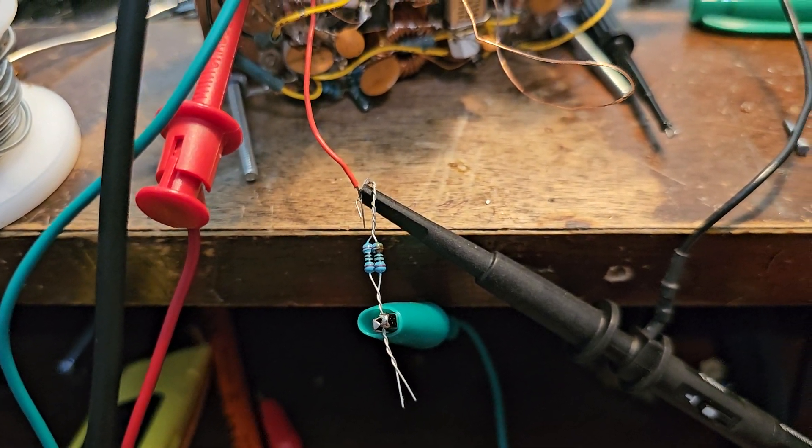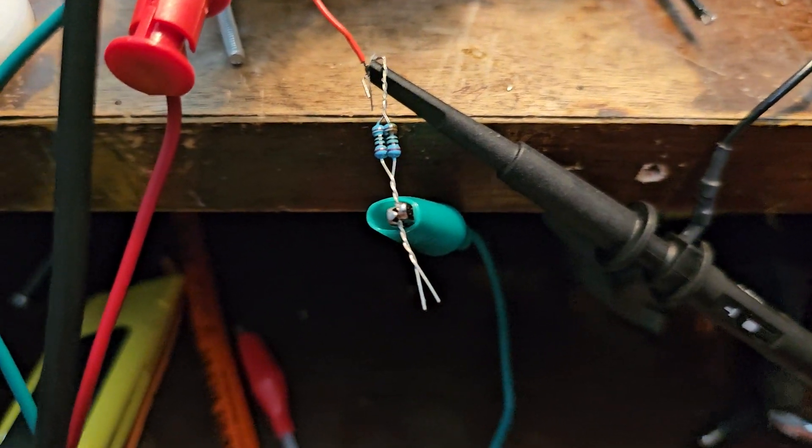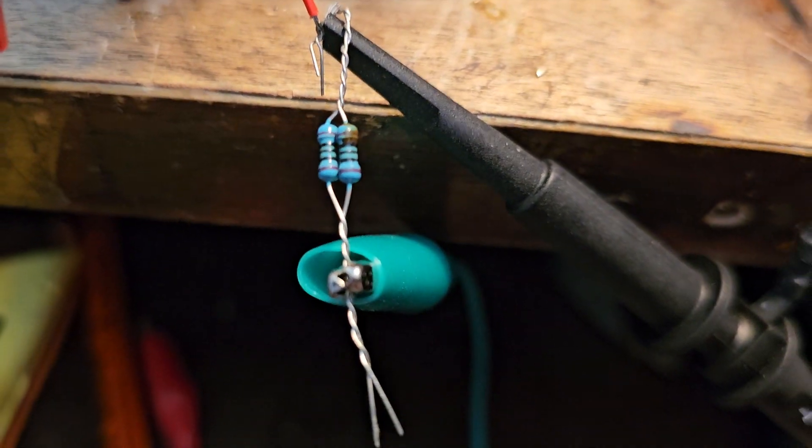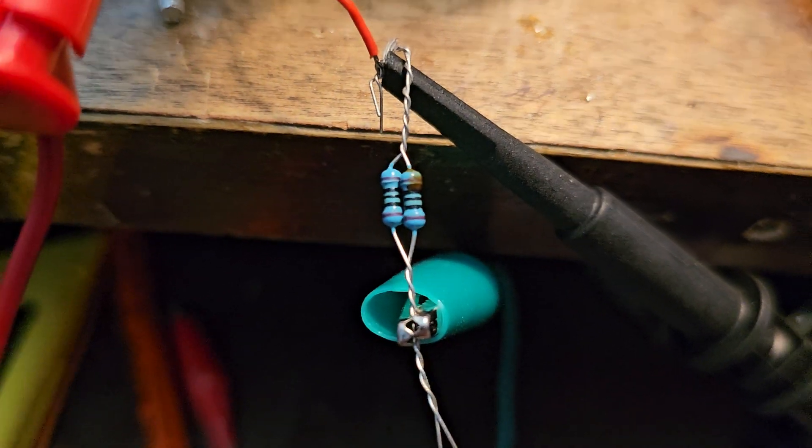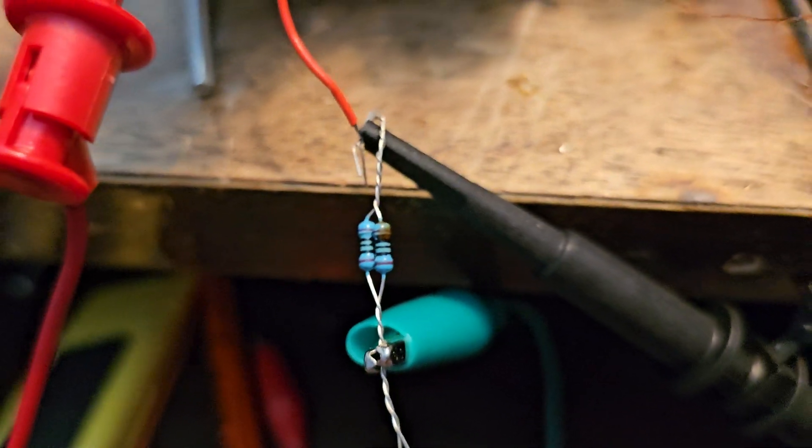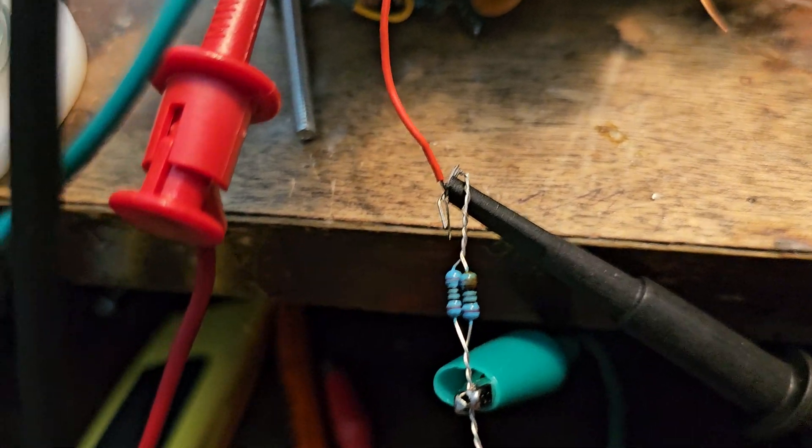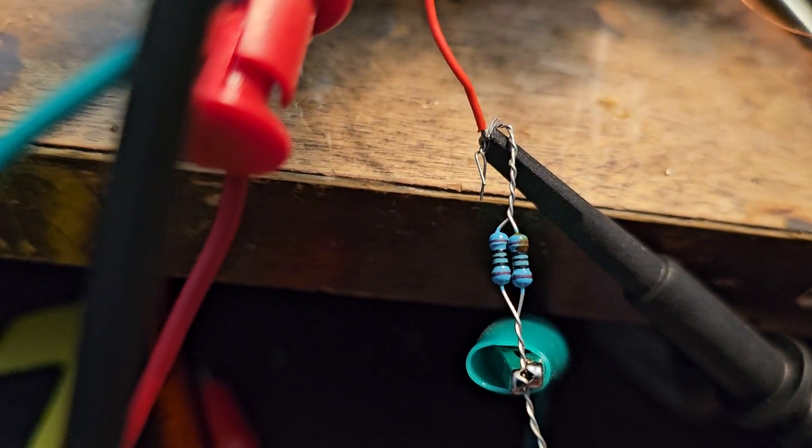And you can see it's starting to - it's not really visible on the camera, but I can see that it's starting to discolor a bit. There's just flux, that's not discoloration, but if you look at the left side you can barely see some discoloration because it's getting really hot.